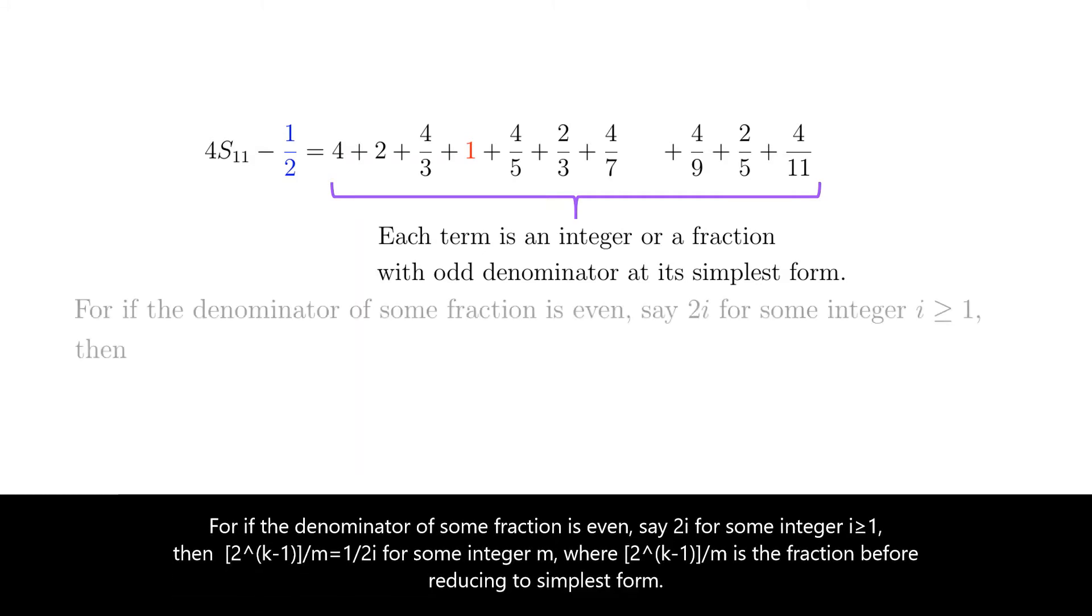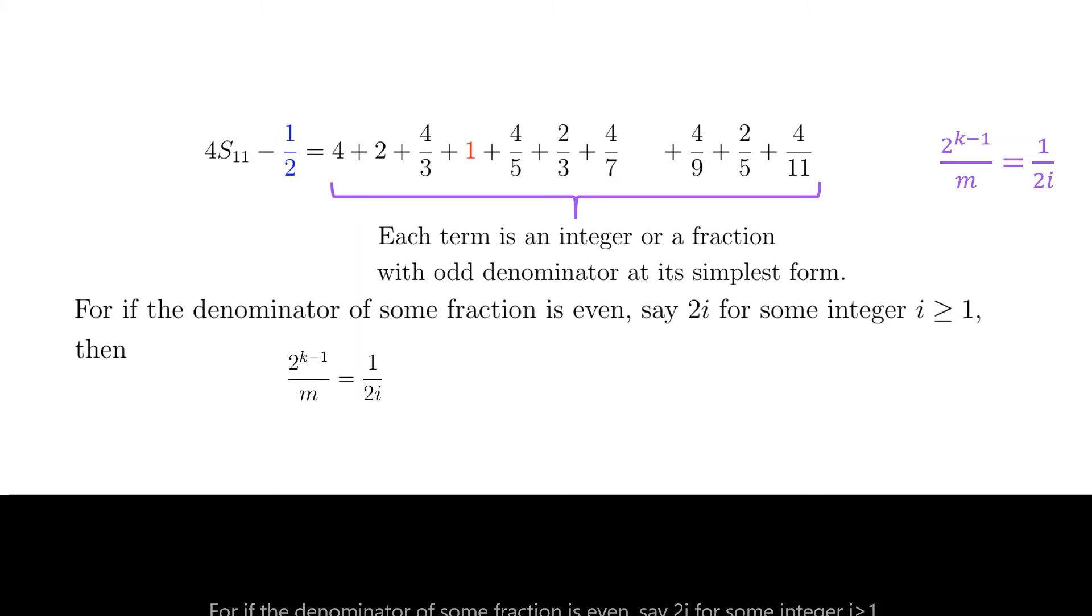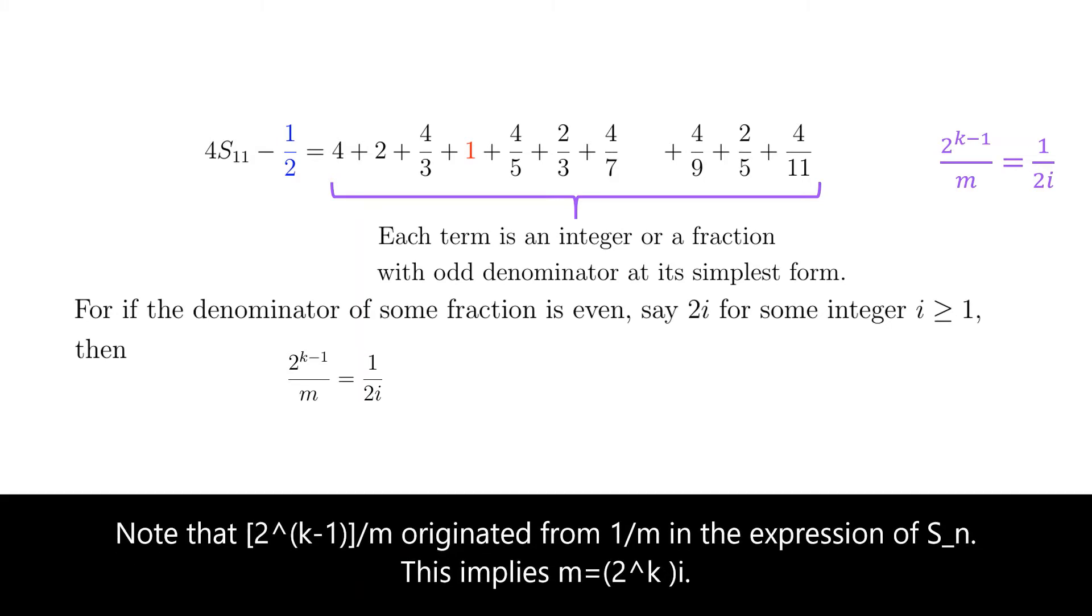For if the denominator of some fraction is even, say 2i for some integer i at least 1, then 2 to the power of k minus 1 over m equals 1 over 2i for some integer m, where 2 to the power of k minus 1 over m is the fraction before reducing to simplest form. Note that 2 to the power of k minus 1 over m originated from 1 over m in the expression of S_n.